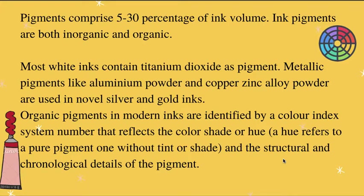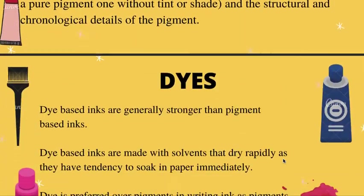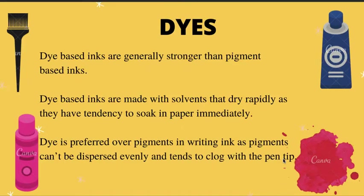Just like the Munsell color chart, the color index system provides all the details of the pigment. Dye is basically water-soluble and is also used to provide color. Dye-based inks are made with solvent that dries rapidly as they have the tendency to soak into the paper immediately. Dye is preferred as it doesn't tend to clog the pen tip.